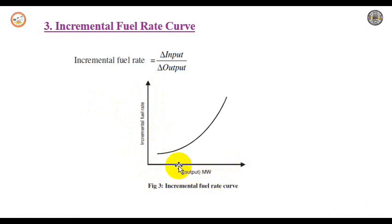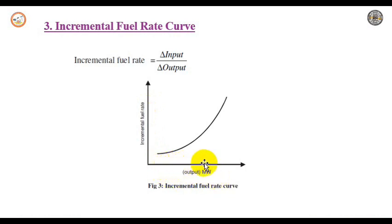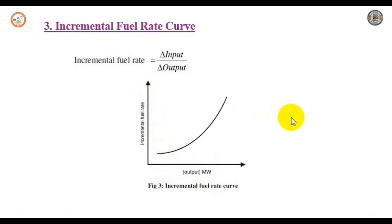It is a plot of incremental fuel rate versus the output in megawatt. As the output increases, the incremental fuel rate also increases. This is the incremental fuel rate curve.